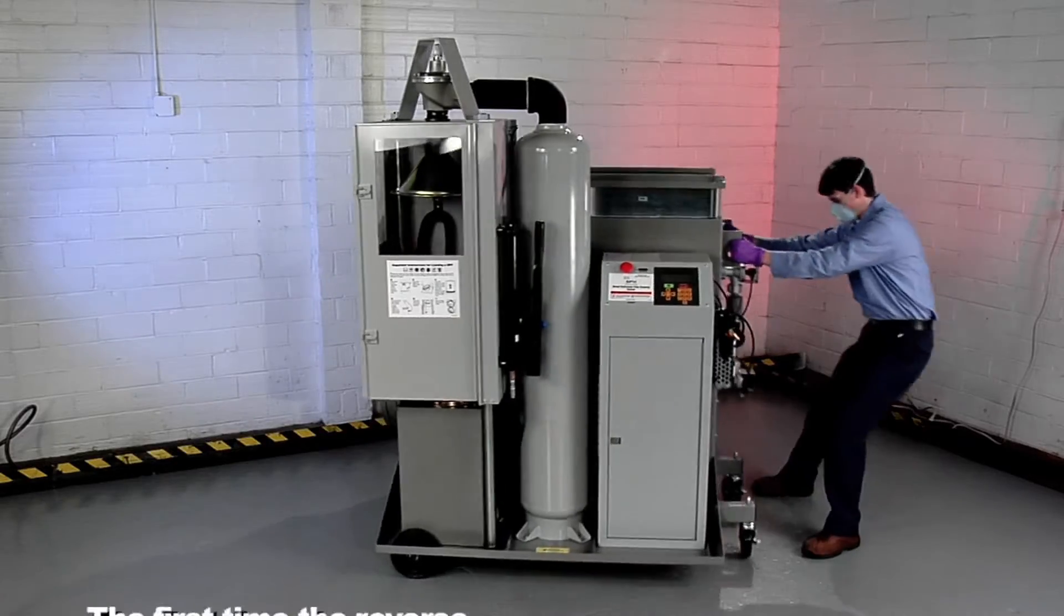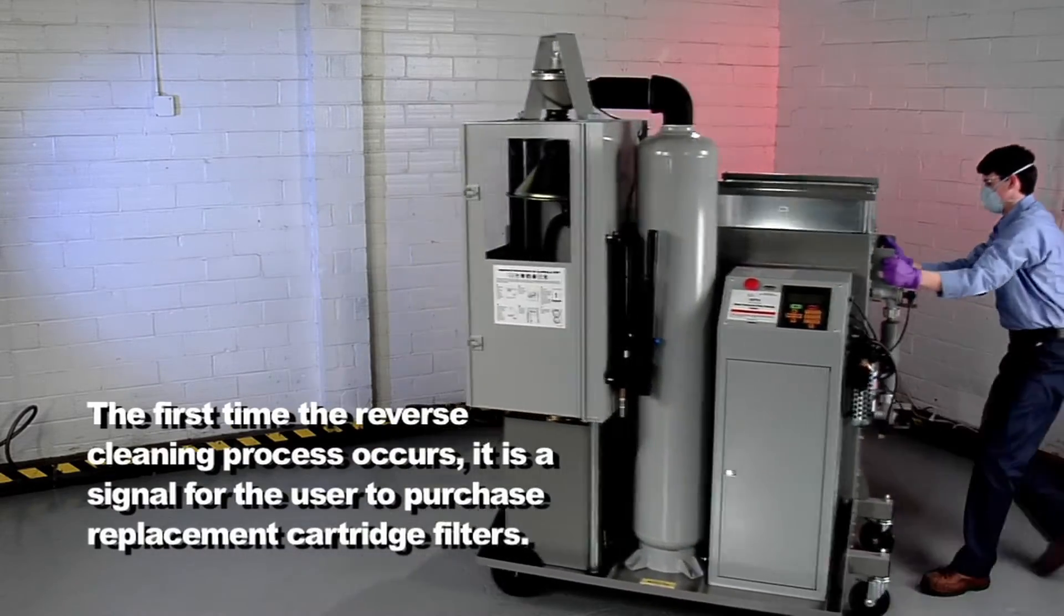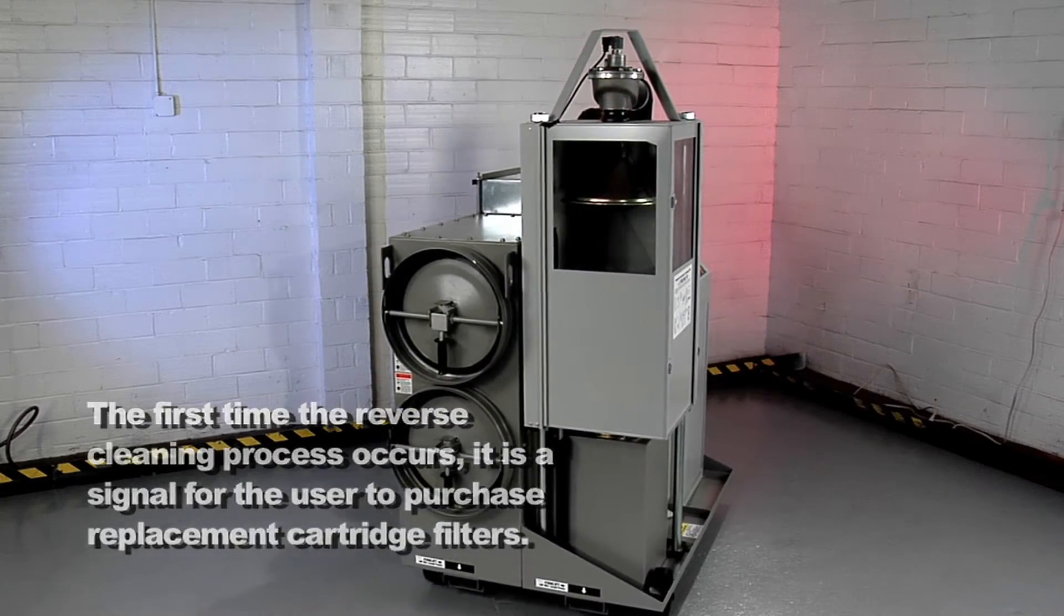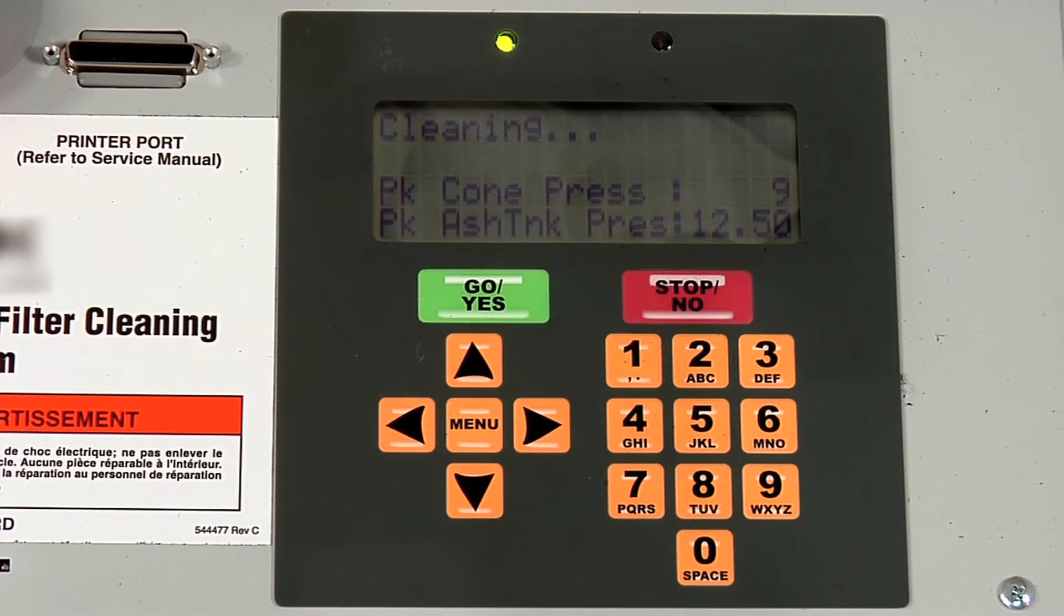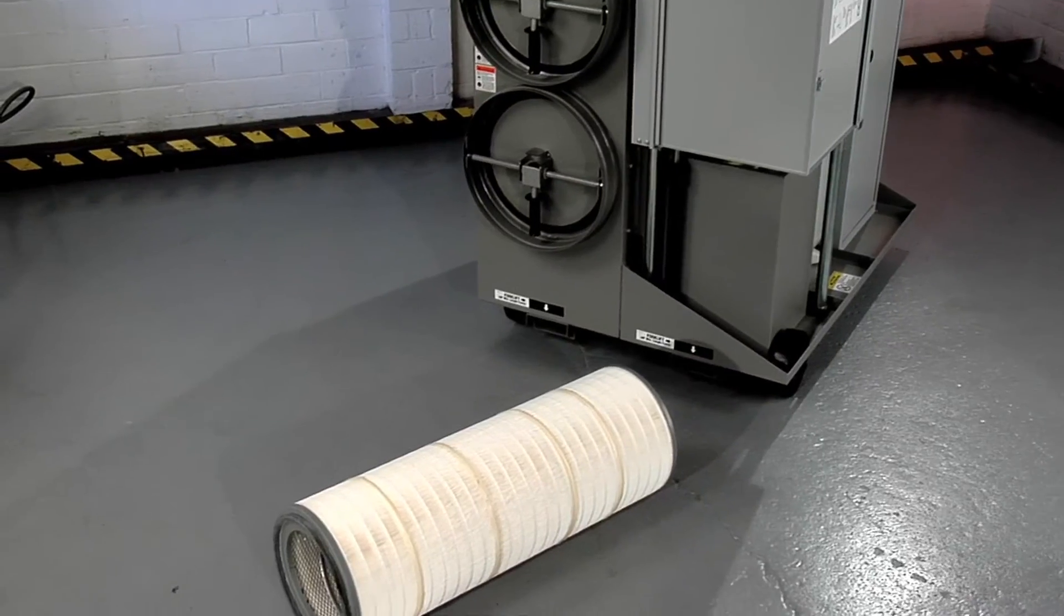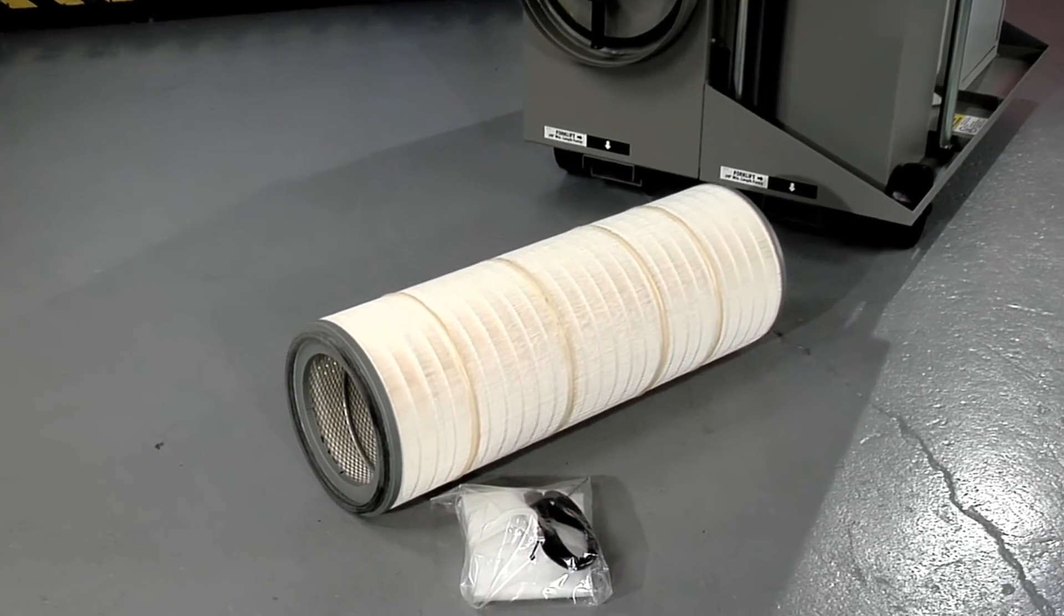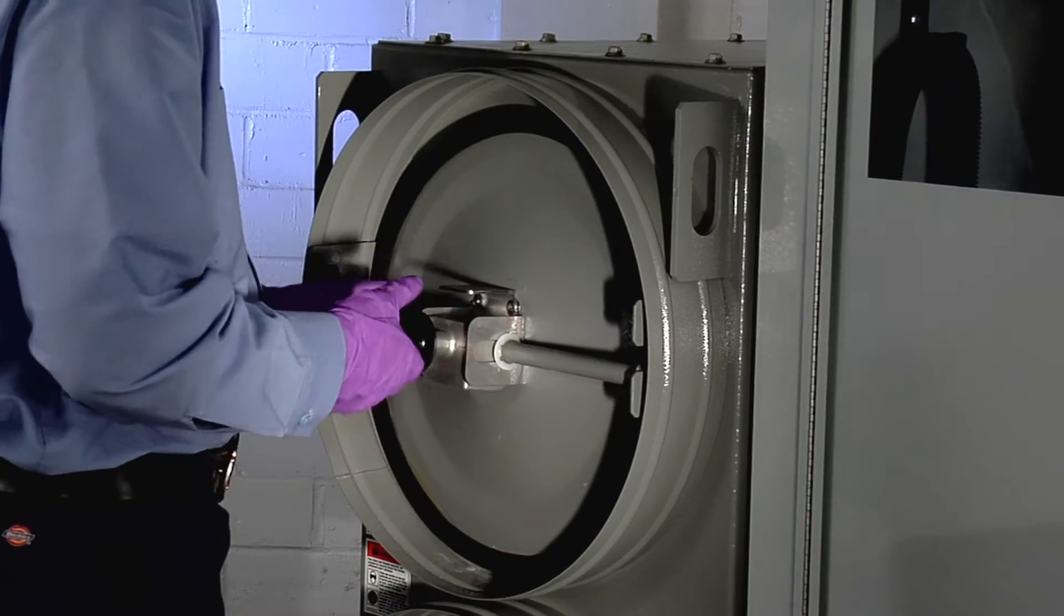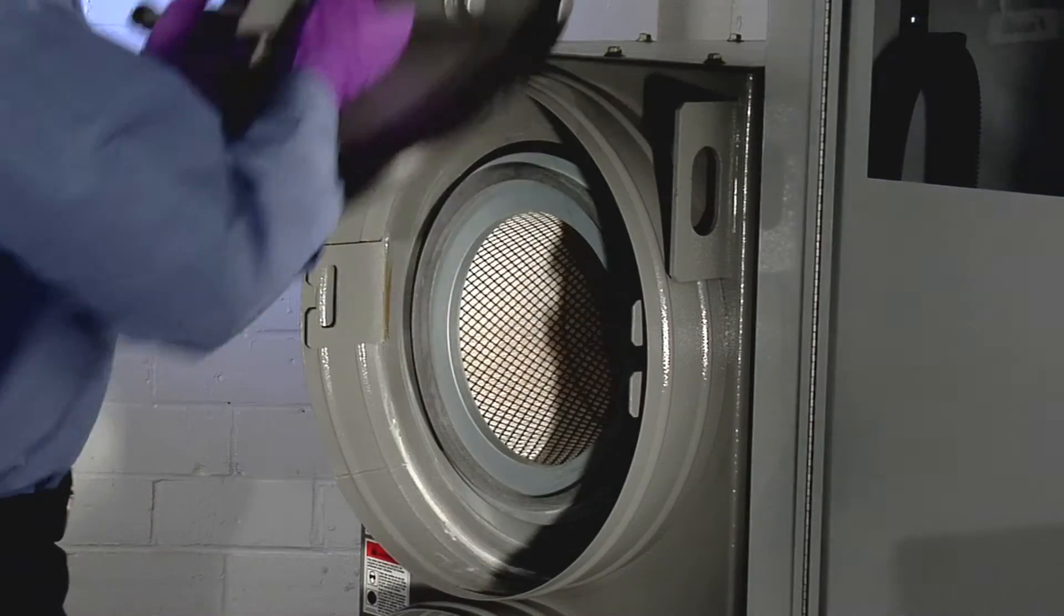At some point, the reverse cleaning process won't be successful and the cartridge filters will need to be replaced. The internal filters bad message displays when this occurs. To replace the filter cartridge follow these steps. Shut off the machine and unplug it. Unlock and remove the cover to the upper cartridge filter.